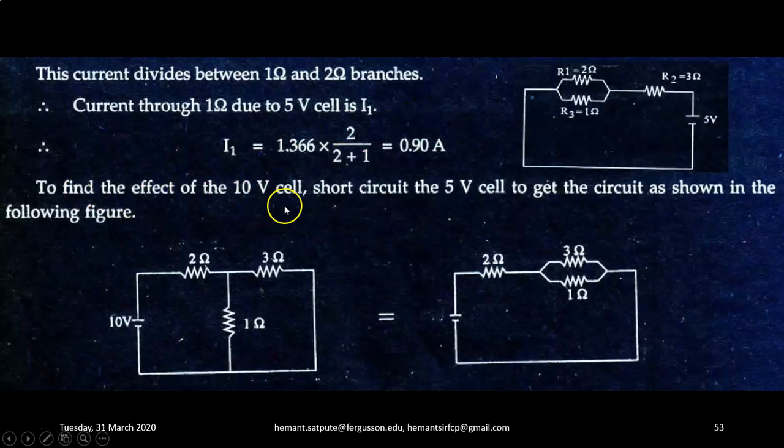Now to find the effect of 10 volt cell, let us short circuit the 5 volt source to get the circuit as shown in the following figure. So now we are shorting the 5 volt voltage source. Now only 10 volt battery is acting across the combination of the circuit. So the circuit will look like this. This circuit is equivalent to this one. 10 volt supply is in series with 2 ohm resistance and parallel combination of 1 and 3 ohm.